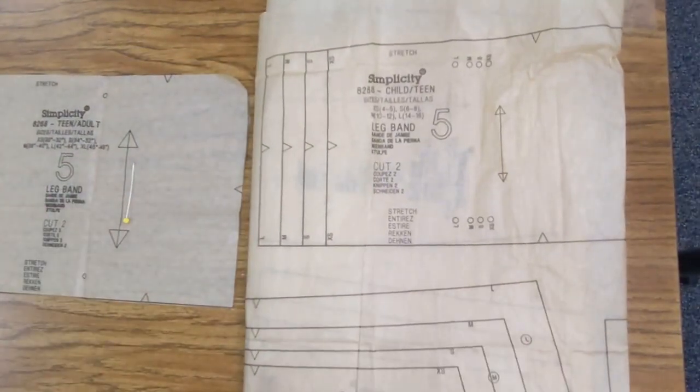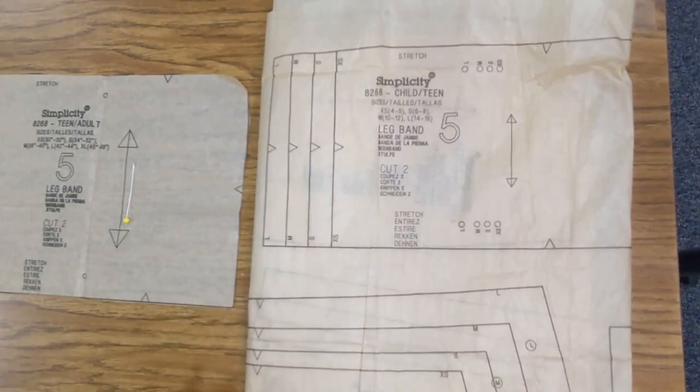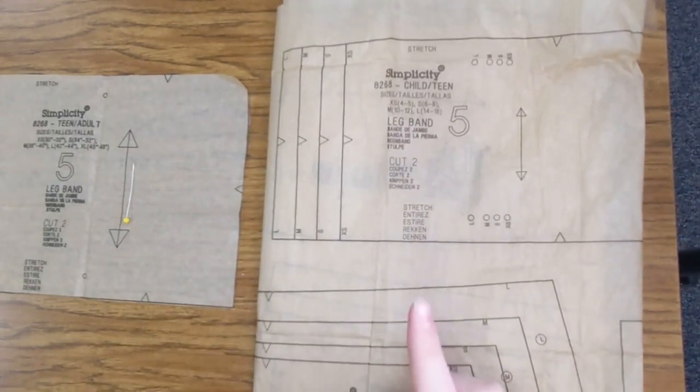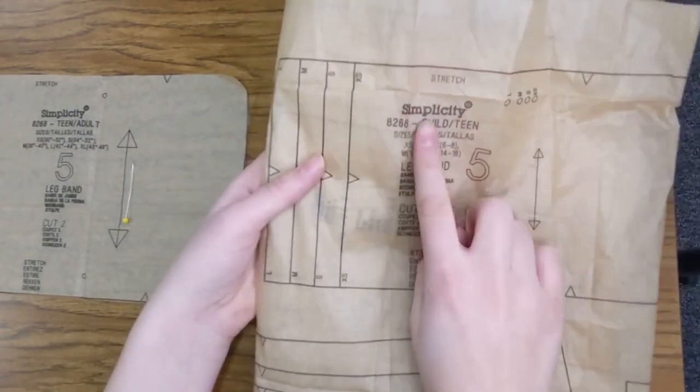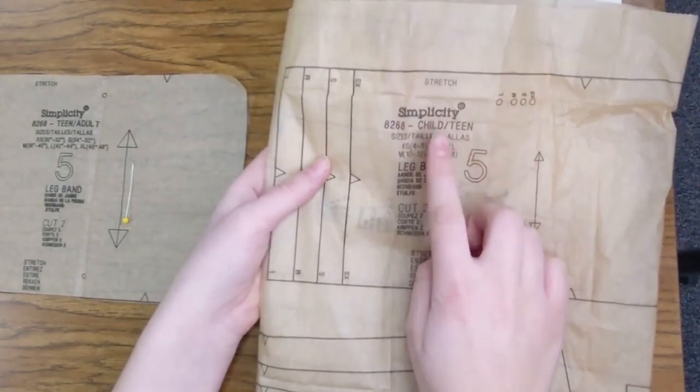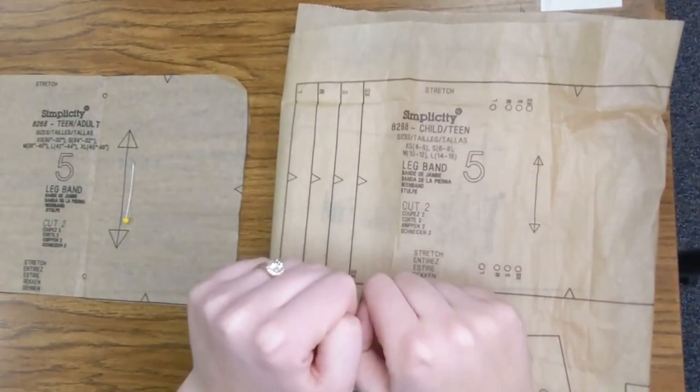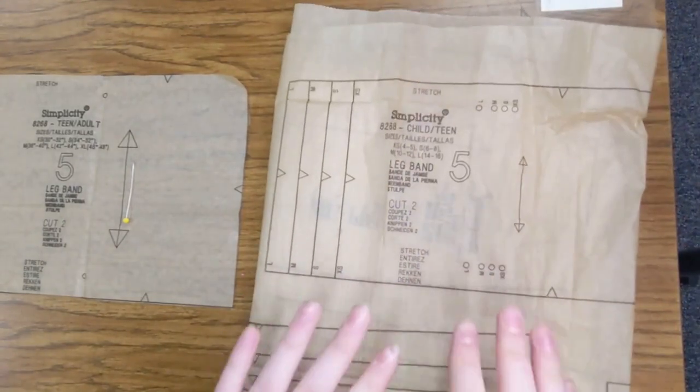Something I should note with the pattern tissue here is that there are two sheets. And one of the sheets is this one right here that says child slash teen. This is a kid's pattern, and it's going to be way too small if you use this pattern.